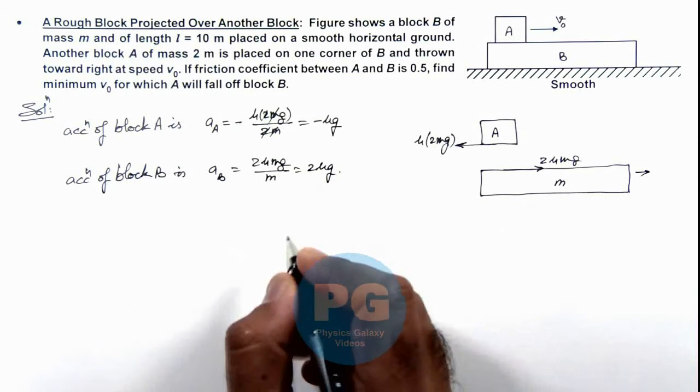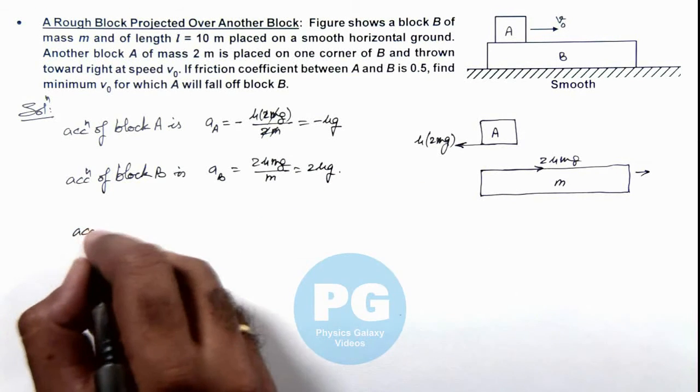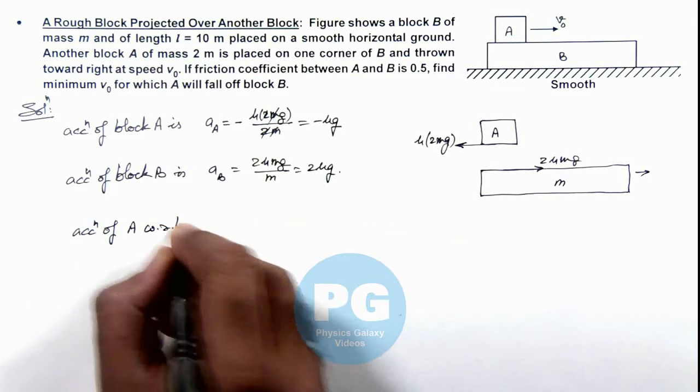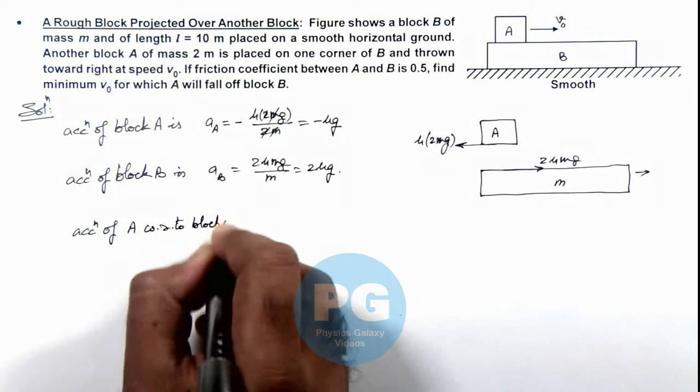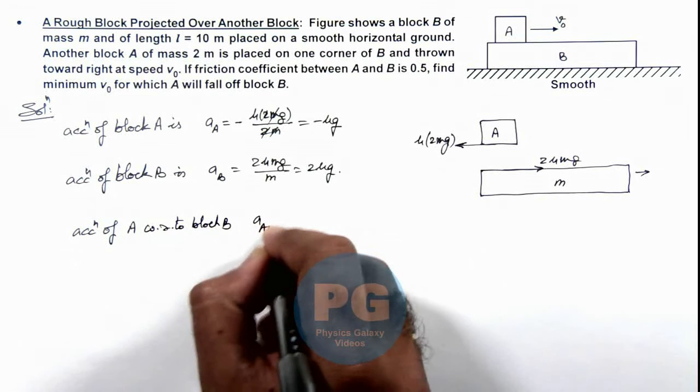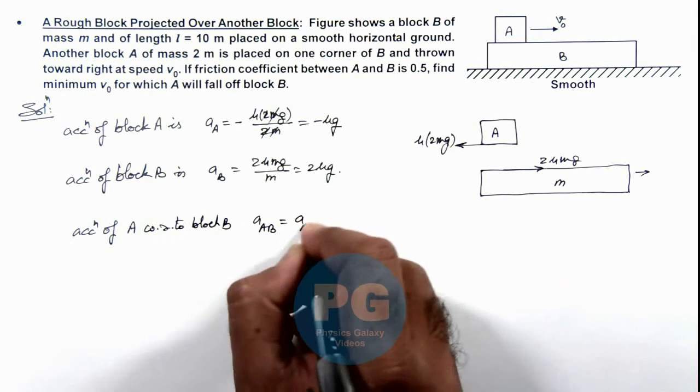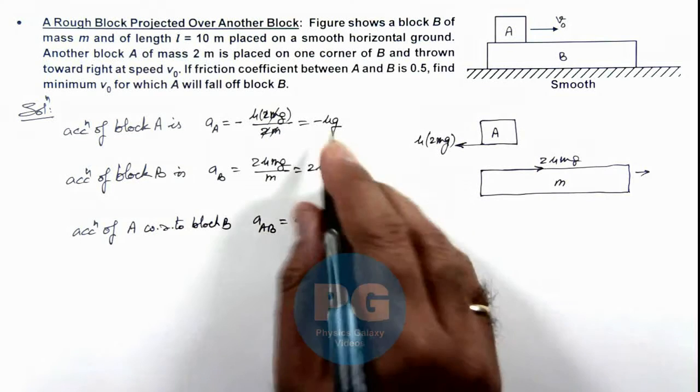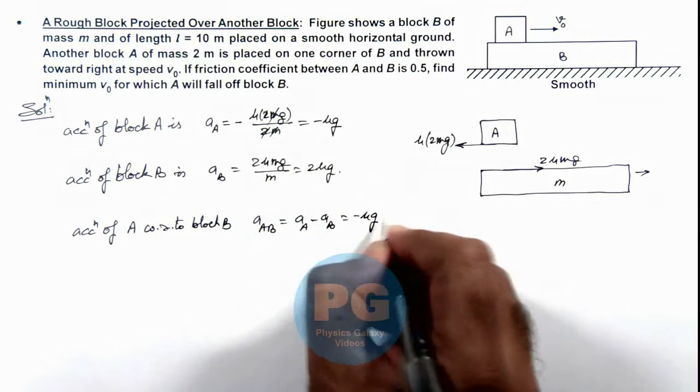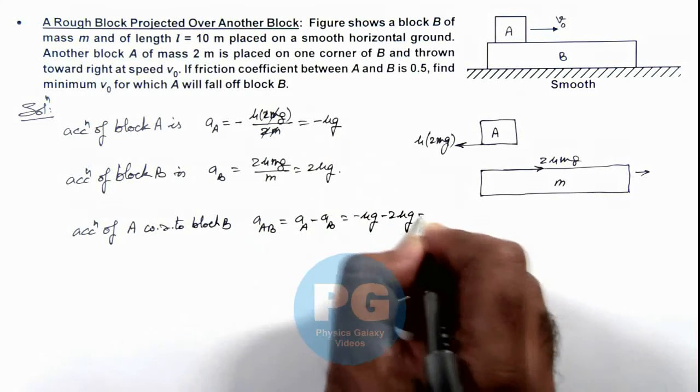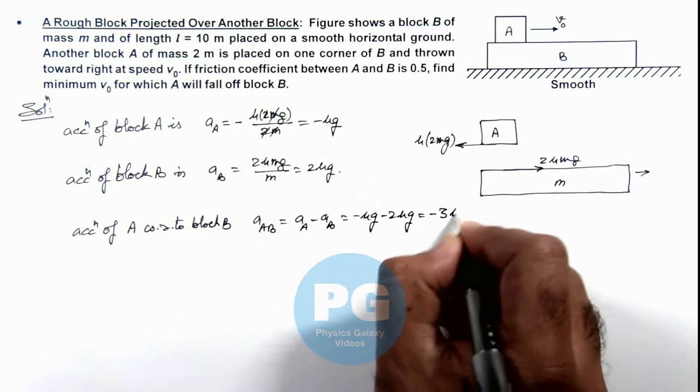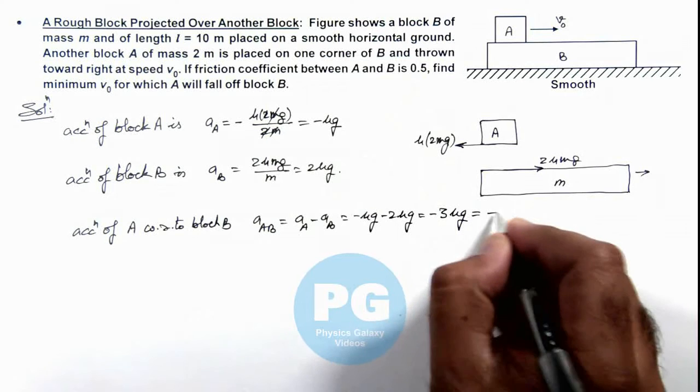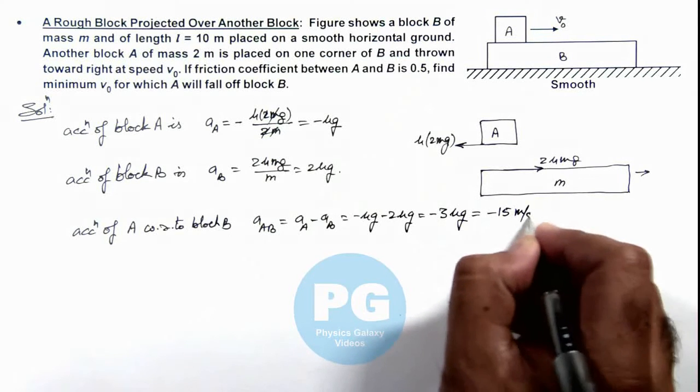Now in this situation, if we calculate the acceleration of block A with respect to block B, then acceleration of A with respect to B we can write as aₐ - aᵦ, and this will be -μg - 2μg, that is equal to -3μg. And the value of μ we are given is 0.5 and g is 10, so it is -15 m/s².